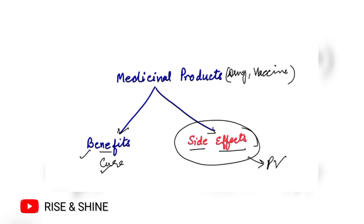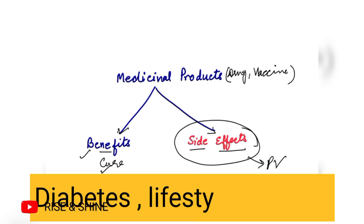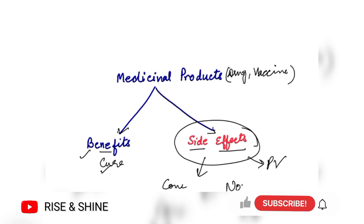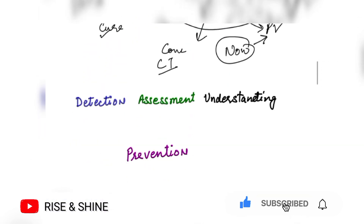The activity that revolves around the management of side effects is pharmacovigilance. When you're doing a clinical trial, it is done under controlled conditions. But when the product is on the market, anyone can take that drug — a lot of patients over a long period of time — and they may have other illnesses like diabetes, lifestyle diseases. Elderly people are also taking it, pregnant women are also taking it, so side effects that didn't appear during the clinical trial are coming now.